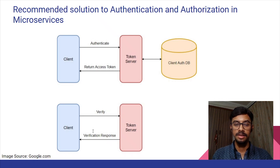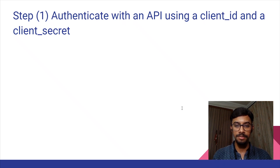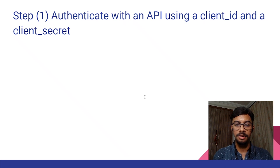Let us discuss the various steps involved in this process. The first step is to authenticate with an API using a client ID and a client secret. The client application needs to authenticate with the framework by passing a client ID and a client secret. The client ID is essentially a user ID, and the client secret can be considered as the password. We will need to secure the secret within our application.